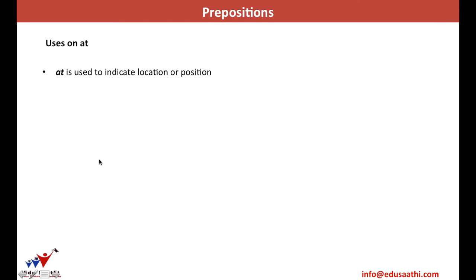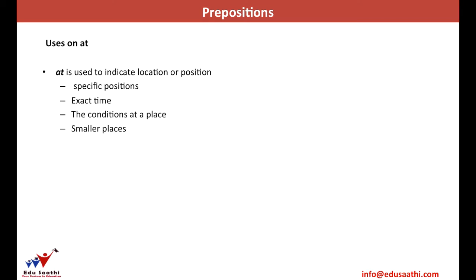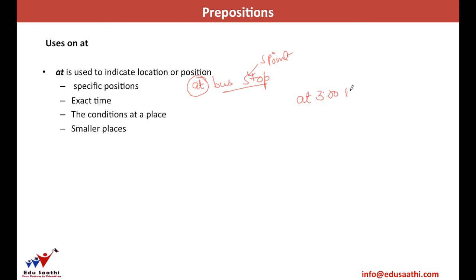Now let's discuss the use of 'at.' 'At' is used to specify particular positions — for example, 'meet me at the train station' or 'at the bus stop,' because you are indicating a specific point. 'At' is also used with exact time — for example, 'the meeting will start at 3 p.m.'